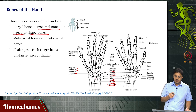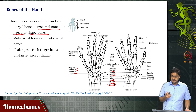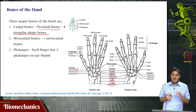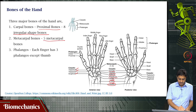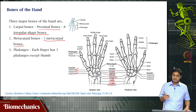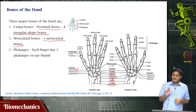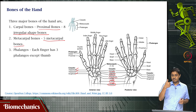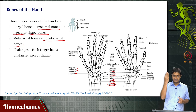Then you have the metacarpal bones — those that articulate with the carpal bones — and there are five of these. Unlike the carpal bones which have individual names such as trapezium, trapezoid, scaphoid, hamate, capitate, pisiform, triquetrum, and lunate, the metacarpal bones do not have names. They are simply called the first, second, third, fourth, and fifth metacarpal. The first metacarpal belongs to the thumb, second to the index finger, and so on through to the fifth.